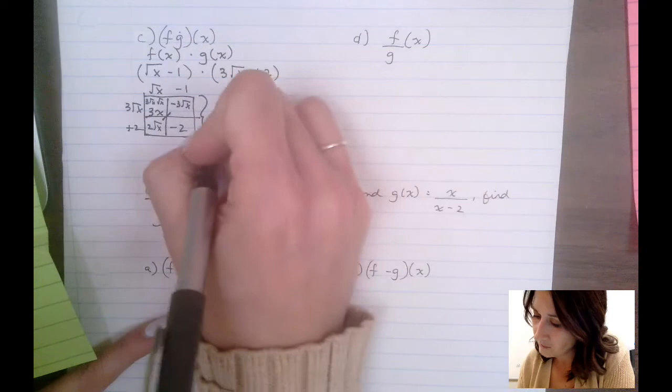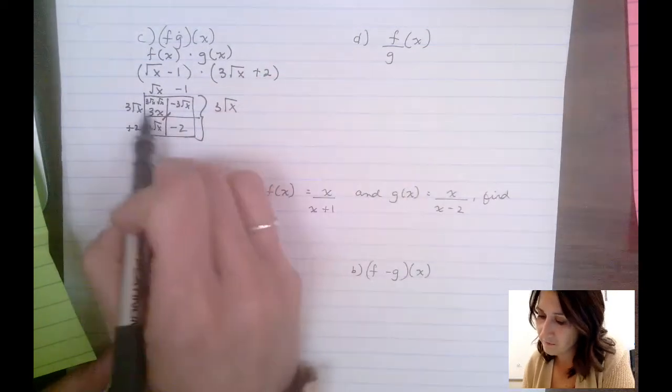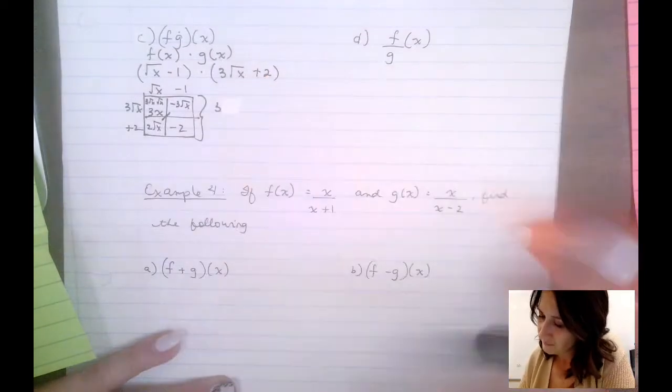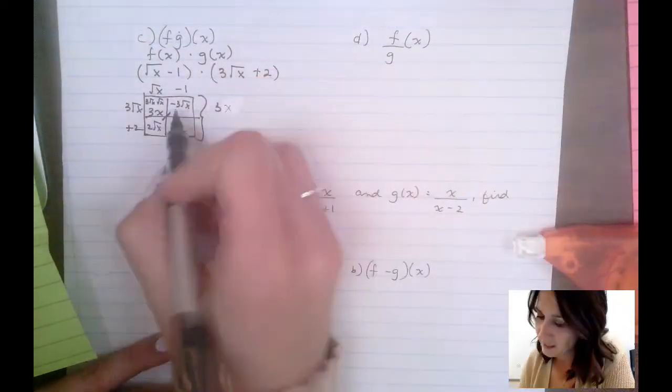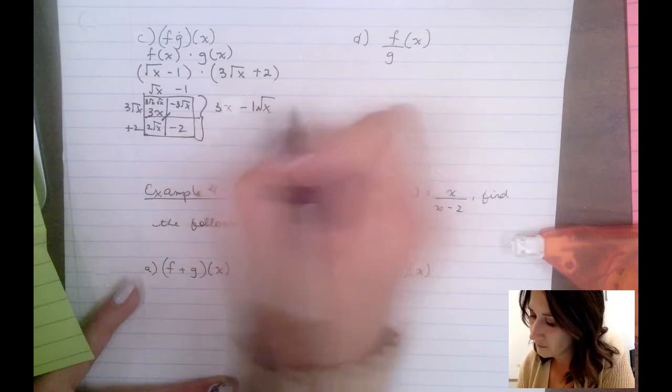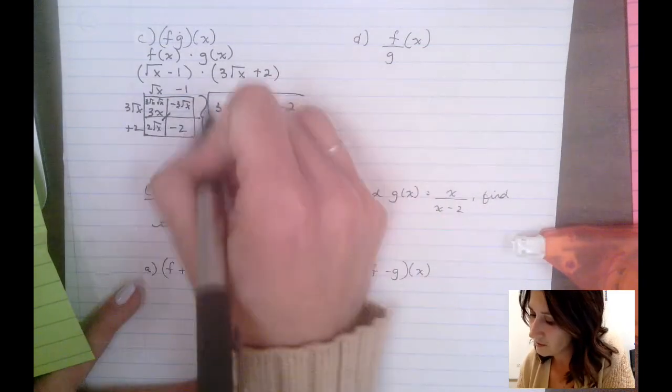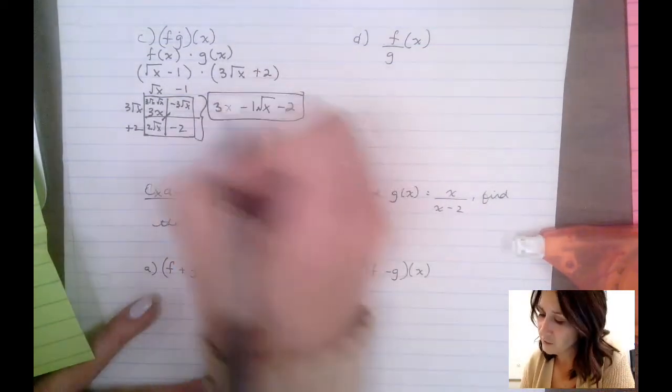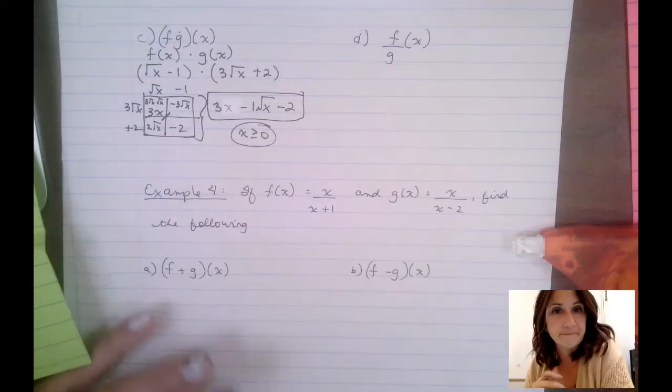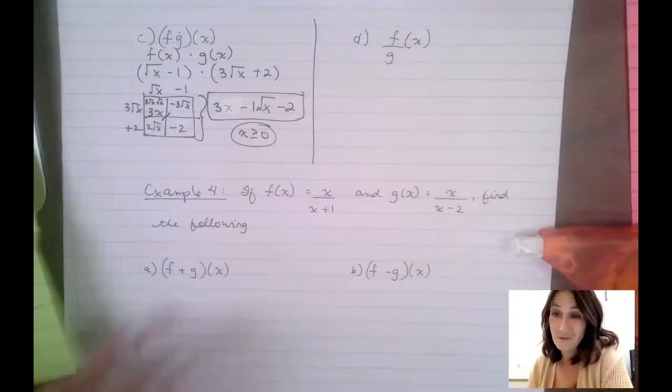These two are like terms because their radicand is the same. So this whole thing becomes three x, negative three and positive two is negative one. And then negative two just sits here all by itself. Okay, so there is my expression remembering that x had to be greater than or equal to zero as my NPV. Okay, that's our process.